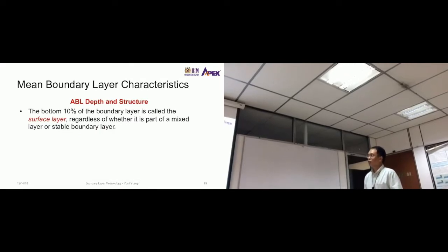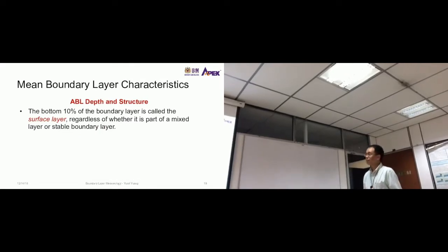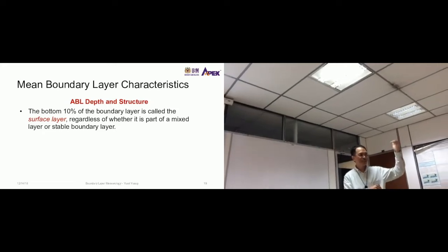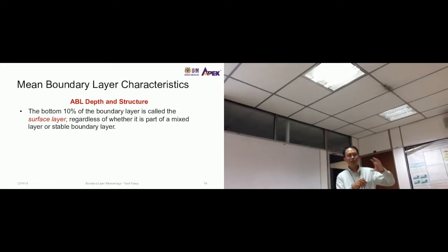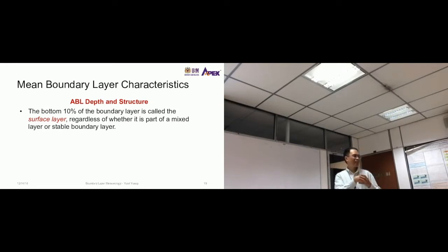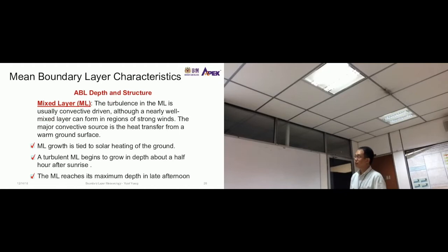The bottom 10% of the boundary layer is called the surface layer, regardless of whether it is part of a mixed layer or a stable boundary layer. This is in addition to the 10% atmospheric boundary layer within the troposphere. So within that atmospheric boundary layer, there is also a surface layer, which is 10% of the atmospheric boundary layer.